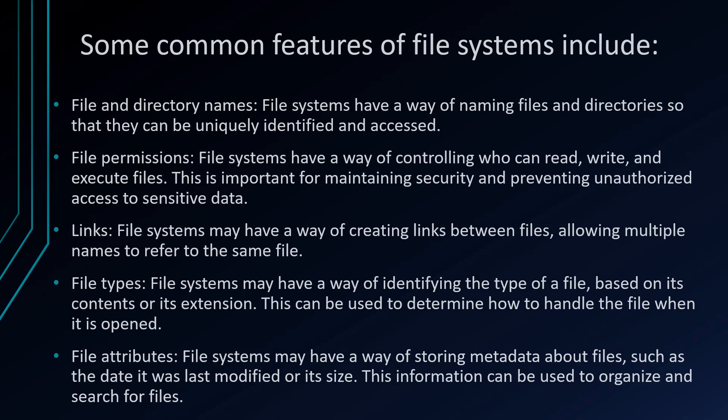File system type — the file system may have a way to identify the type of a file based on its extension, which can be used to determine how to handle the file when it is opened. File system types include ext2, ext3, and xfs.